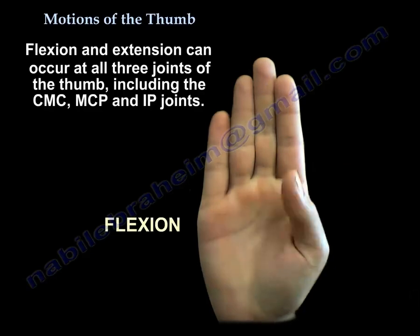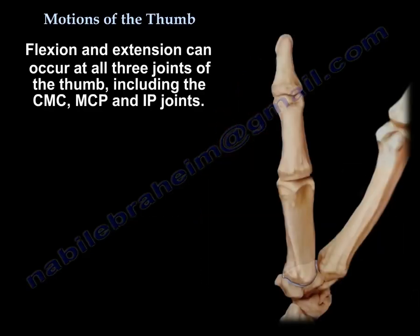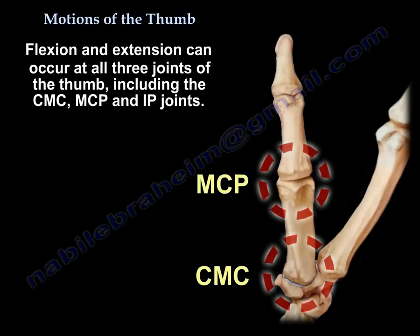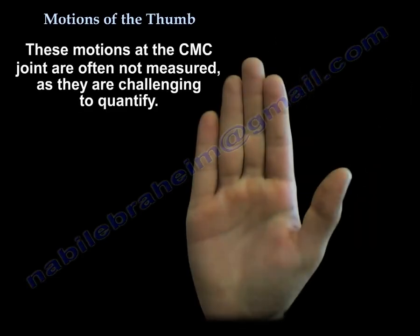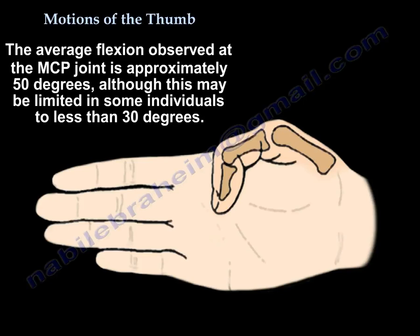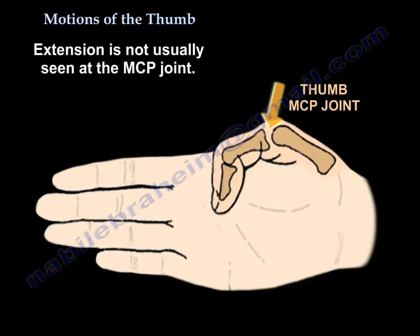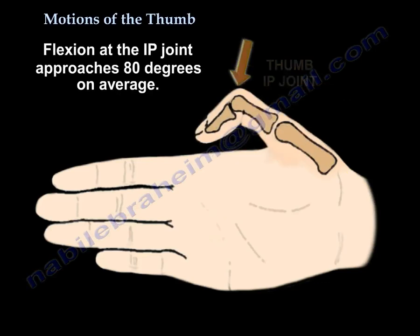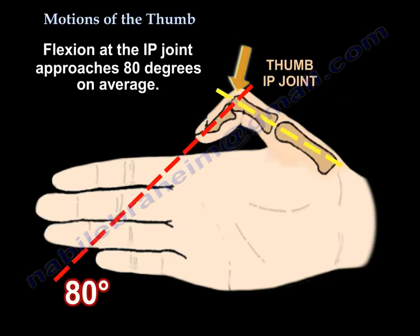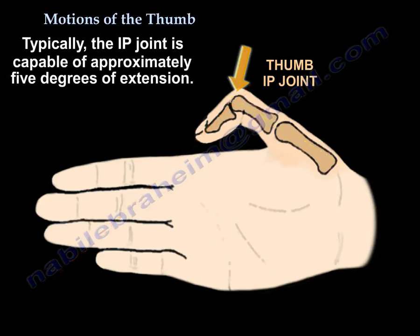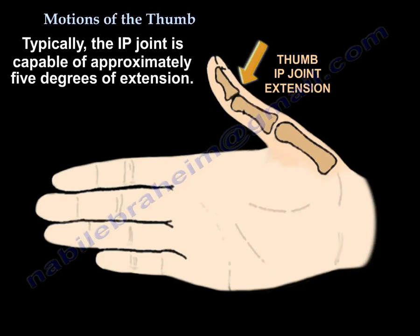Flexion and extension can occur at all three joints of the thumb, including the carpometacarpal joint, metacarpophalangeal joint, and interphalangeal joint. These motions at the carpometacarpal joint are often not measured, as they are challenging to quantify. The average flexion observed at the metacarpophalangeal joint is approximately 50 degrees, although this may be limited in some individuals to less than 30 degrees. Extension is not usually seen at the metacarpophalangeal joint. Flexion at the interphalangeal joint approaches 80 degrees on average, and the interphalangeal joint is capable of approximately 5 degrees of extension.